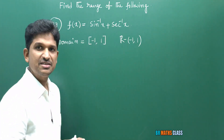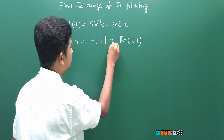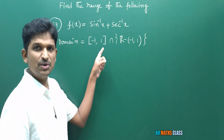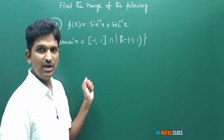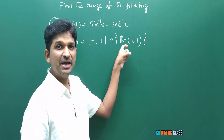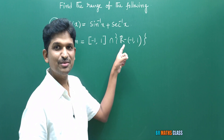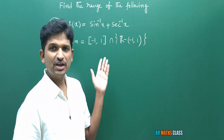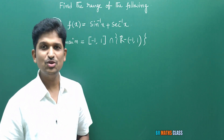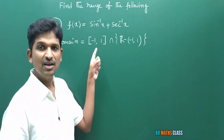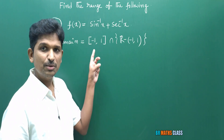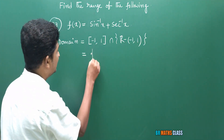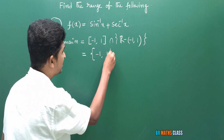The domain of sin⁻¹x + sec⁻¹x is the intersection of these two sets. In [−1, 1], the values −1 and 1 are included. In the domain of sec⁻¹x, −1 and 1 are also present. So the only common values in both sets are −1 and 1. The intersection is the set {−1, 1}.